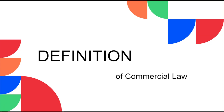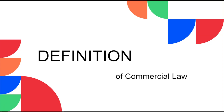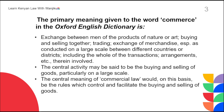The first thing we're going to ask ourselves is: what is the definition of commercial law? The word 'commercial' comes from the word 'commerce.' According to the Oxford English Dictionary, commerce is the exchange between men of the products of nature or arts; it is the buying and selling, trading, and the exchange of merchandise especially on a large scale between different countries or districts. On this basis, the central meaning of commercial law would be the rules which control and facilitate the buying and selling of goods.